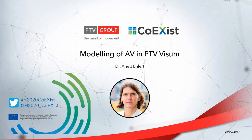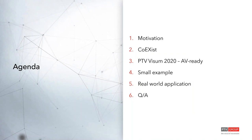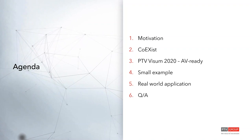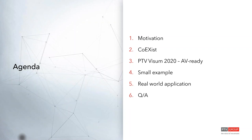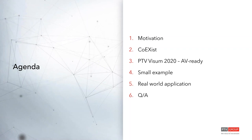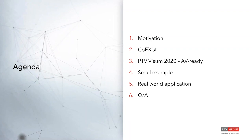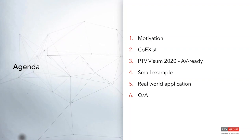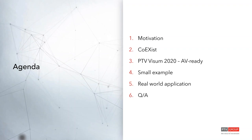I would like to start with the agenda. I will start with a short introduction into the topic, explain the motivation, and this already leads us to Coexist, a research project. I will explain the new features available in Visum 2020, the upcoming release. To better understand these features, I have prepared a small toy example to demonstrate the effects. And afterwards, I would also like to show an example of how modeling of autonomous vehicles can be considered in real models, followed by time for questions.